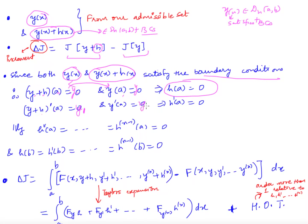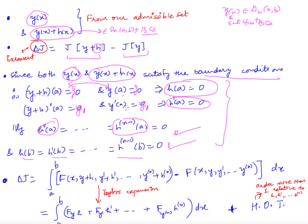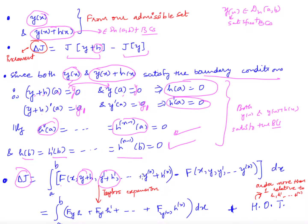Continuing, we get h''(a) = 0, and up to the (n−1)th derivative of h at a equals 0. Similarly, h(b) = 0, h'(b) = 0, and the (n−1)th derivative of h at b equals 0. These conditions on h arise because both y(x) and y(x)+h(x) satisfy the boundary conditions. The increment is then the integral from a to b of [f(x, y+h, y'+h', ..., y^(n)+h^(n)) − f(x, y, y', ..., y^(n))] dx.